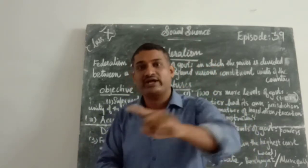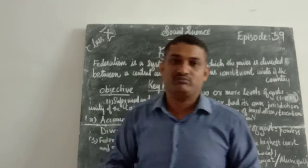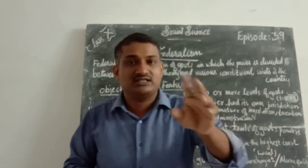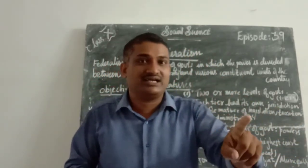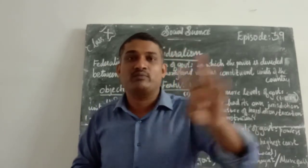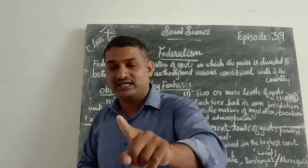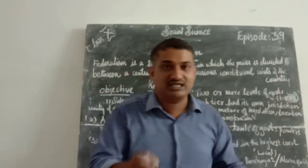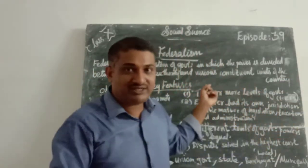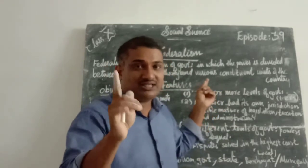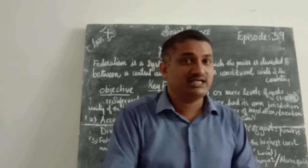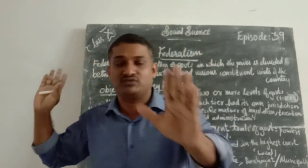Louis XVI ruled in France — monarchical form of government. In Russia, you know that Tsar Nicholas II ruled. He was a ruler of the Romanov dynasty. That is not a federal form of government. That is the best example. India is the best example for federal government.